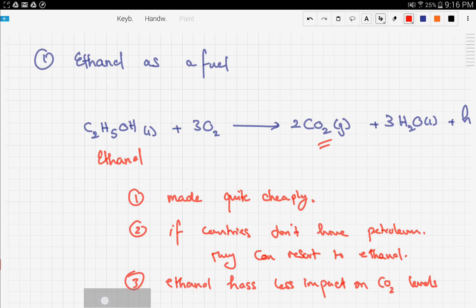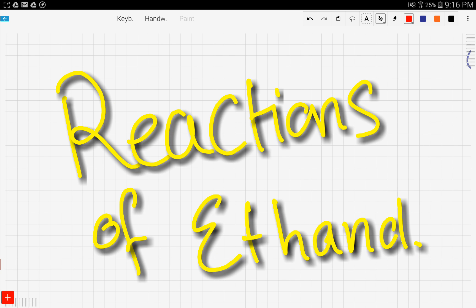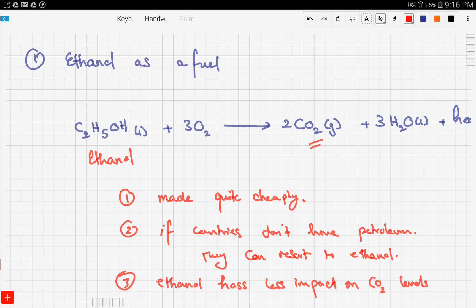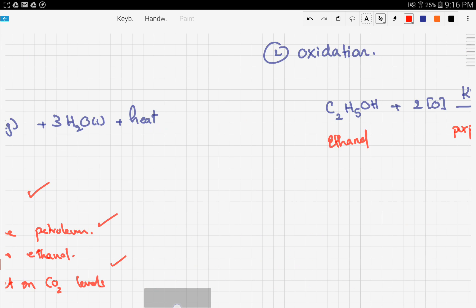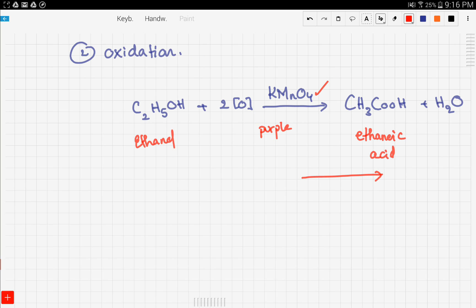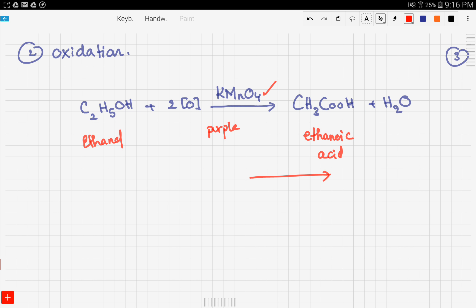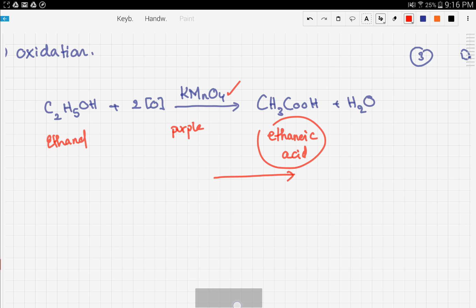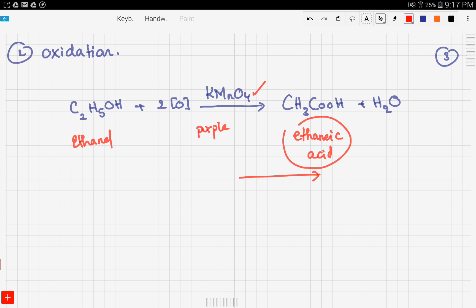Let's recap. In this video we talked about the reactions of ethanol. First, we talked about ethanol as a fuel and why it's a good thing to use ethanol as a fuel - these are the advantages. Second, we talked about oxidation. We said that using an alcohol, in this case ethanol, we can make a carboxylic acid (ethanoic acid) using acidified potassium manganate, and the color changes from purple to colorless.